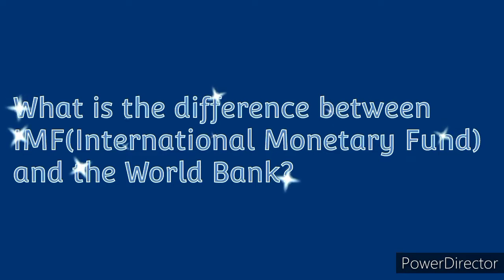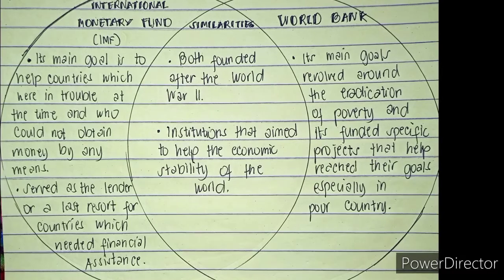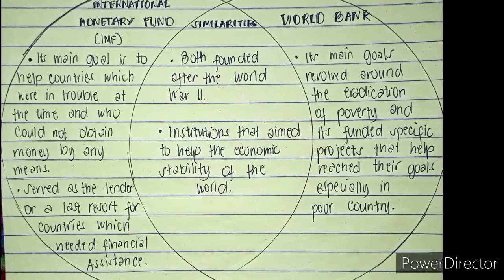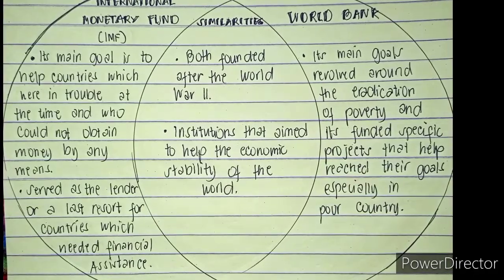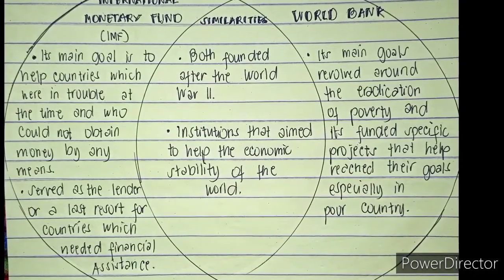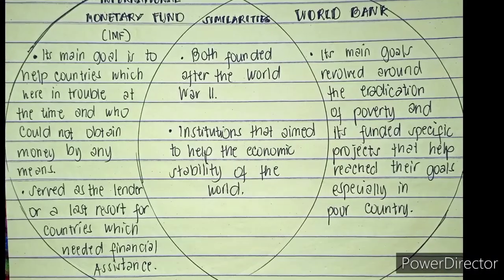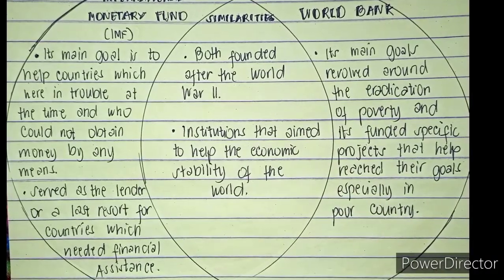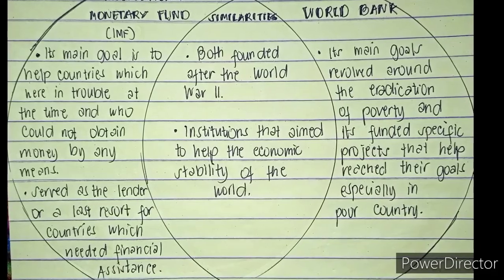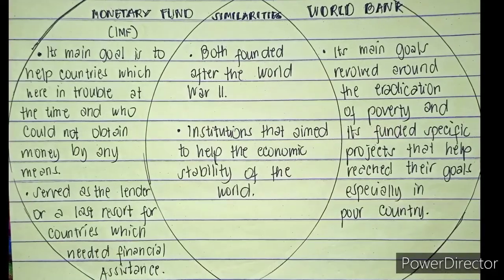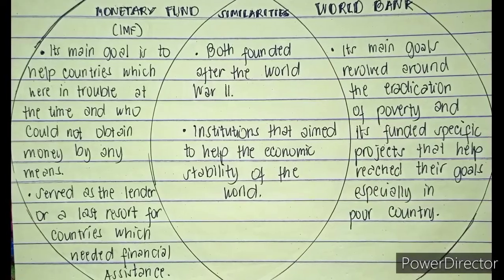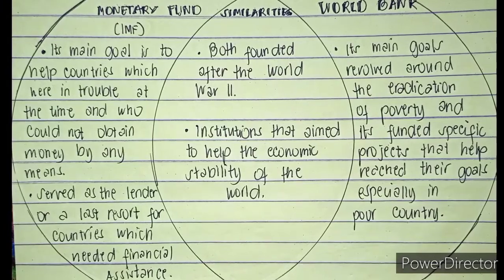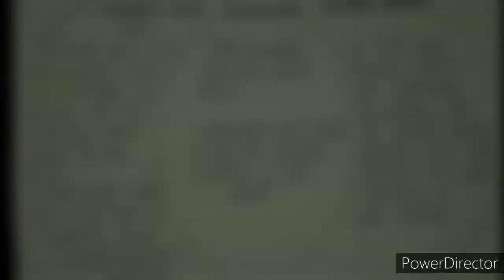What is the difference between the IMF and the World Bank? Based on my answer in the diagram, the International Monetary Fund, or the IMF, its main goal is to help countries which were in trouble and could not obtain money by any means. It served as the lender of last resort for countries which needed financial assistance. While the World Bank, its main goals revolve around the eradication of poverty and it funded specific projects that help reach their goals, especially in poor countries.